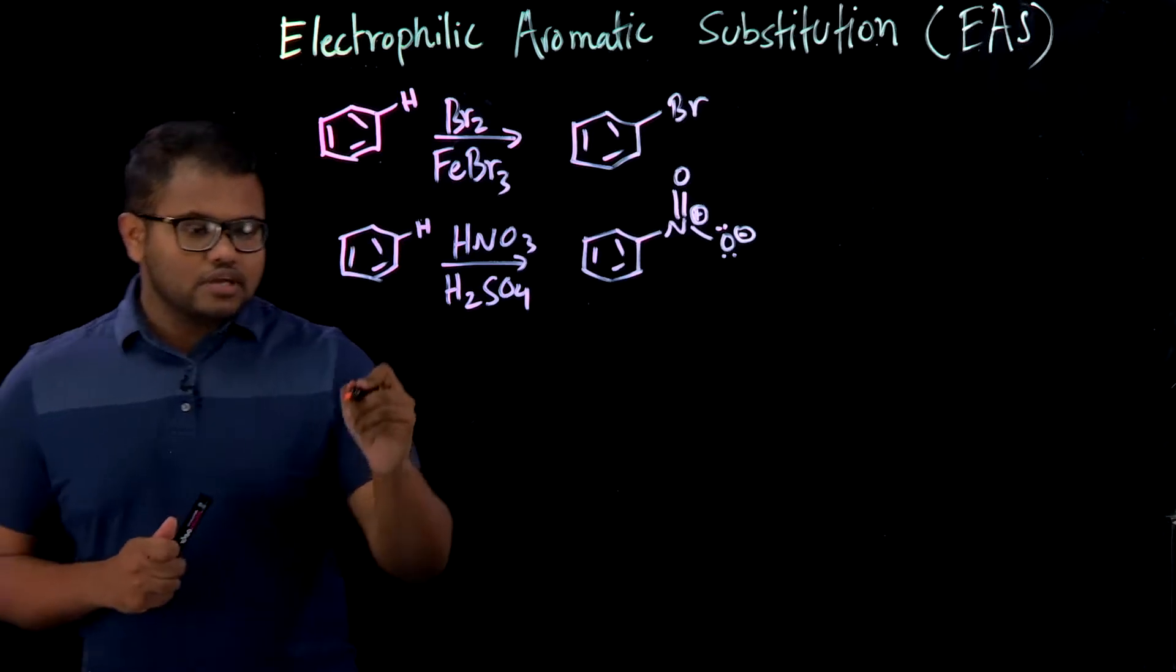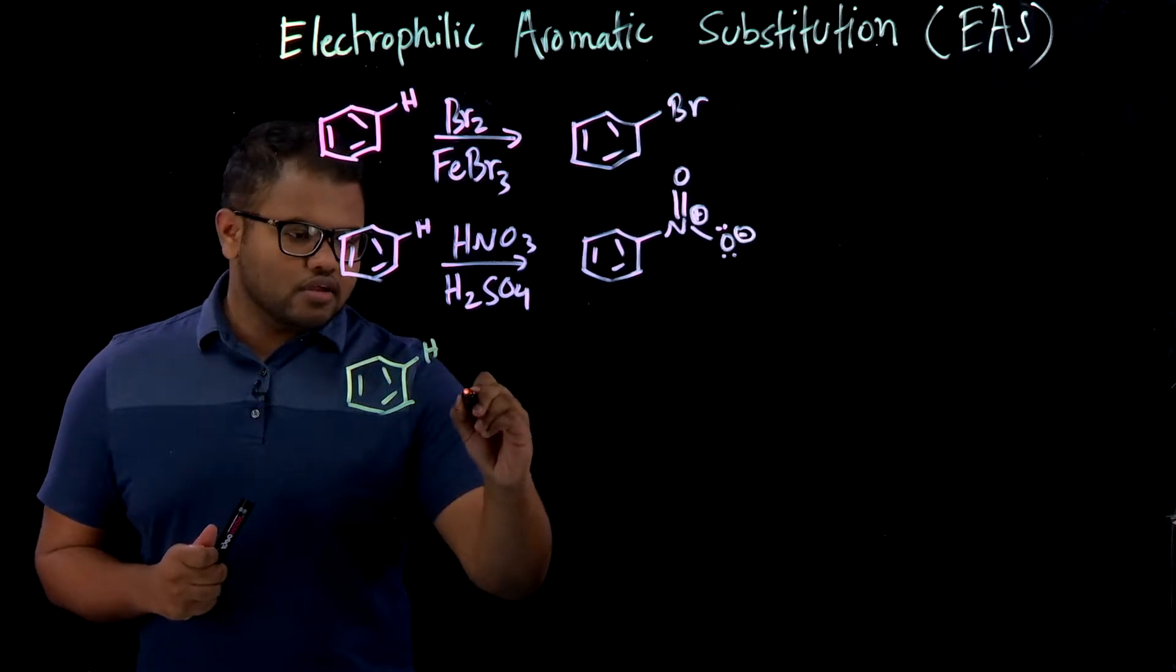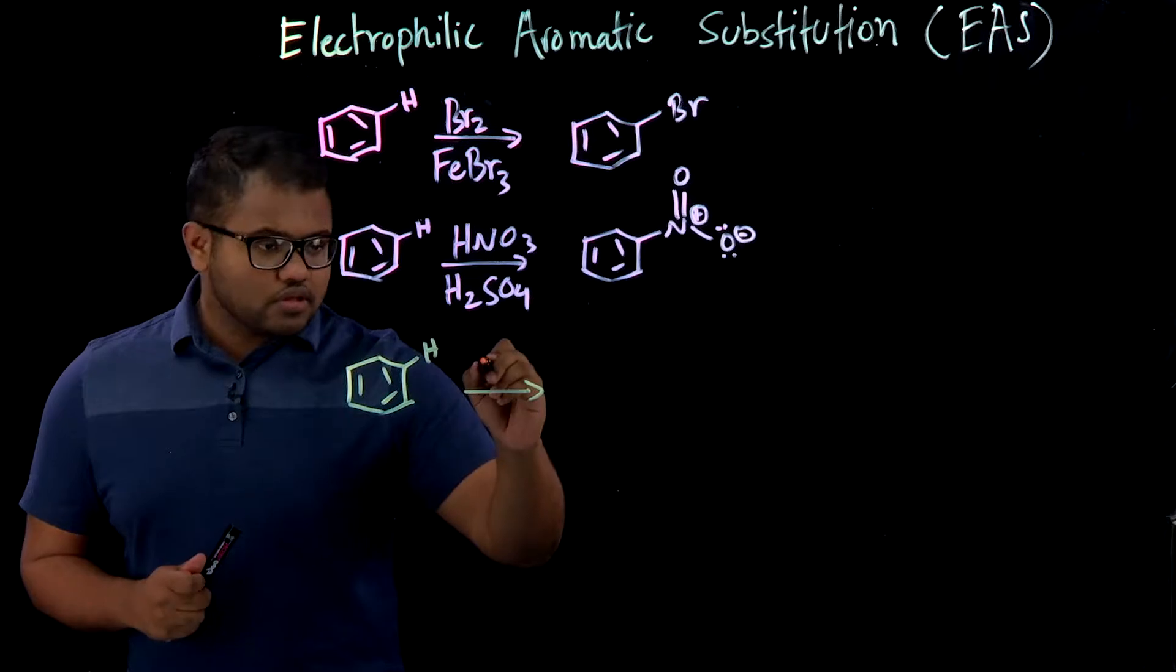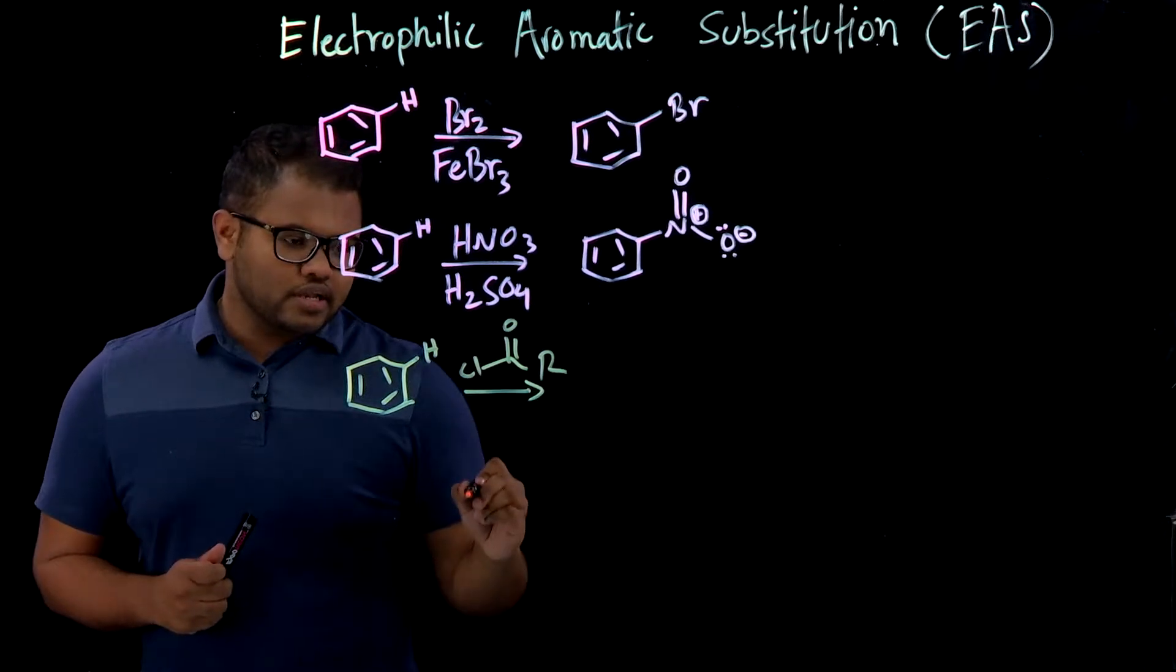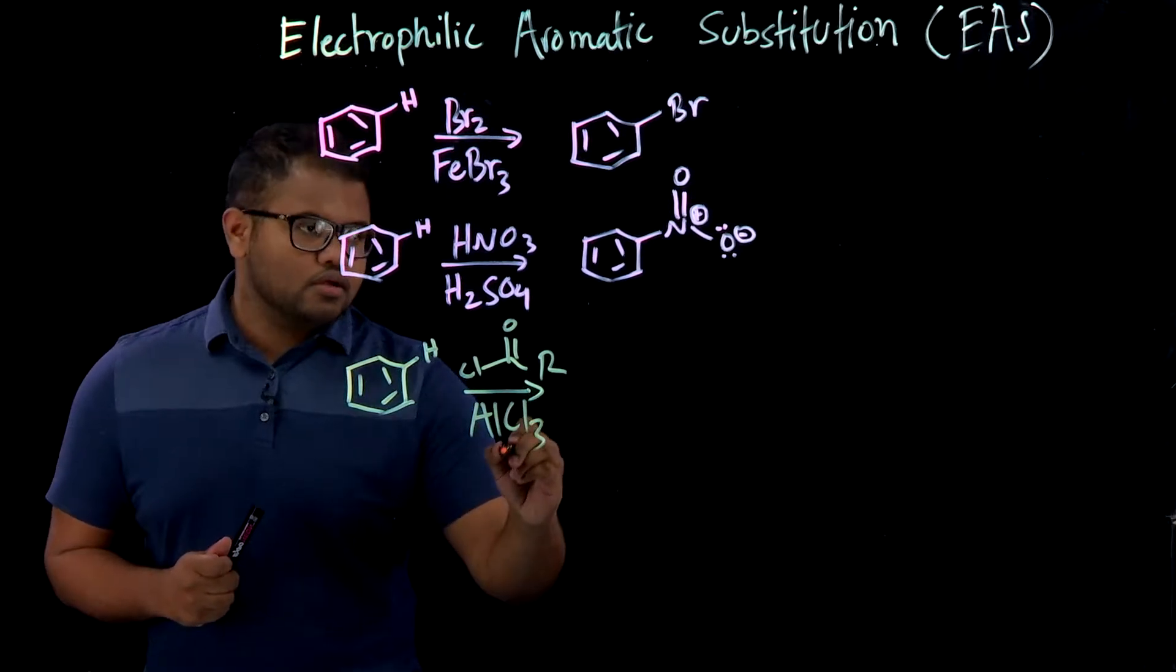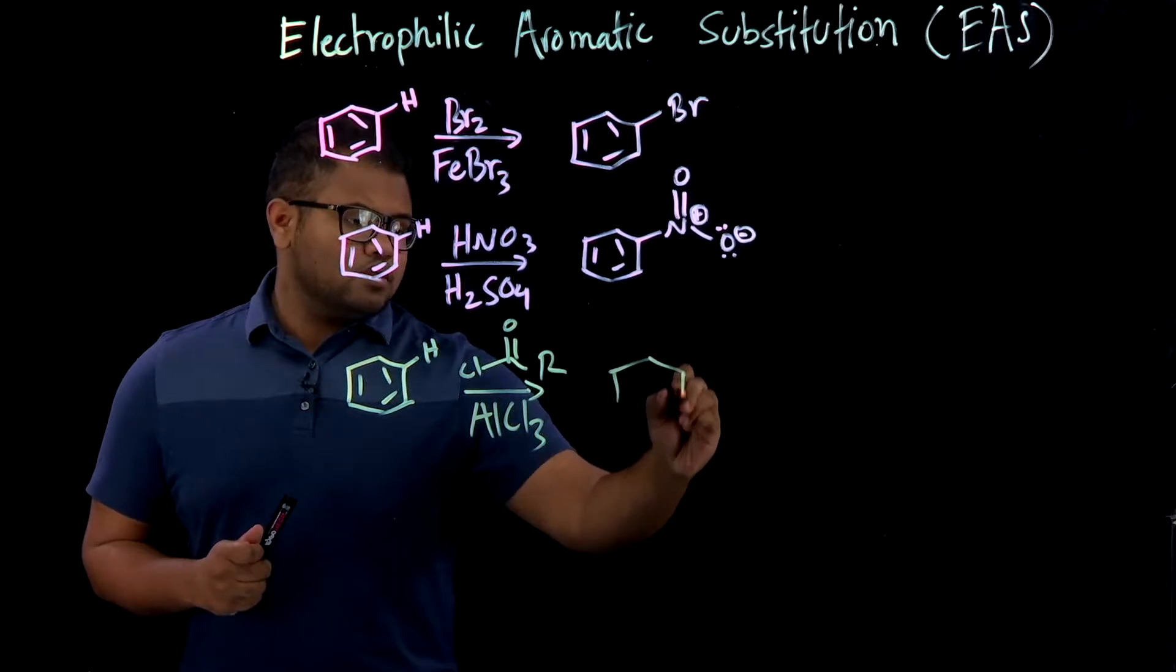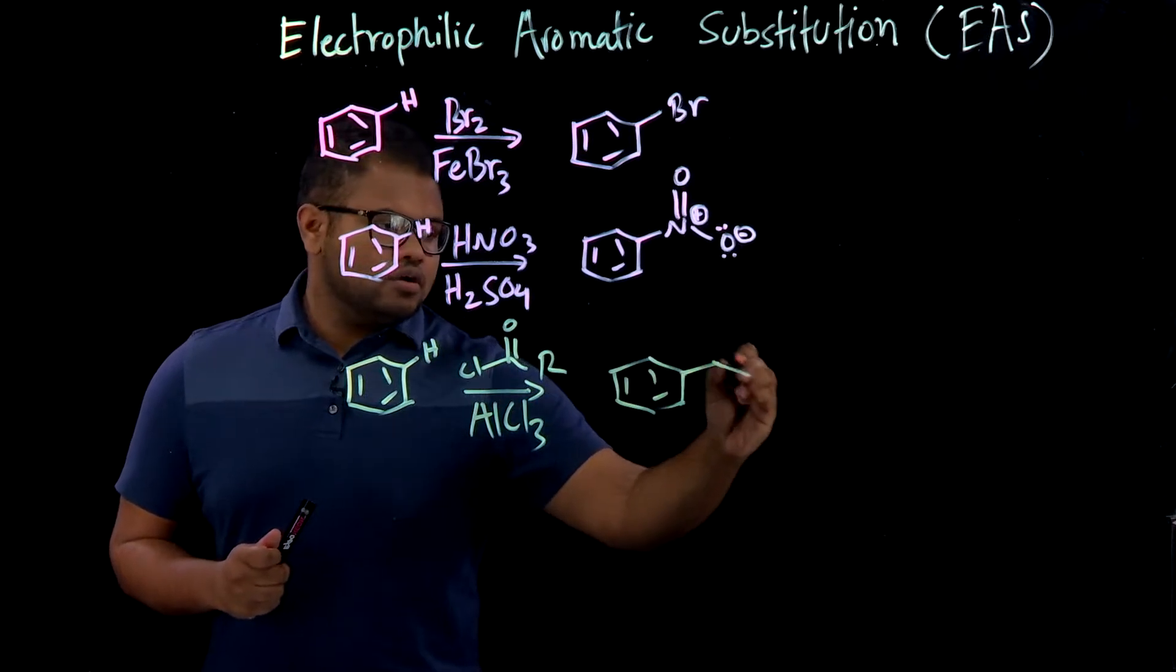Another example you're going to be seeing, very common as well, is if you take a benzene ring, react it with any acyl chloride in the presence of aluminum trichloride, you substitute the H here with the acyl group.